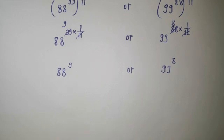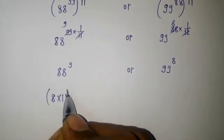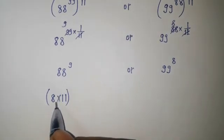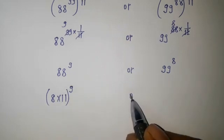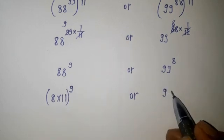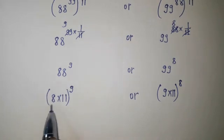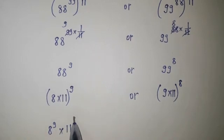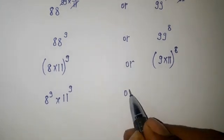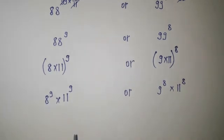Now we will explore the base. We can see that 88 is the product of 8 and 11, and 99 is 9 multiplied by 11. So expanding: the left side becomes 8^9 × 11^9 and the right side becomes 9^8 × 11^8. Both sides now have 11 as a base — with power 9 on the left and power 8 on the right.